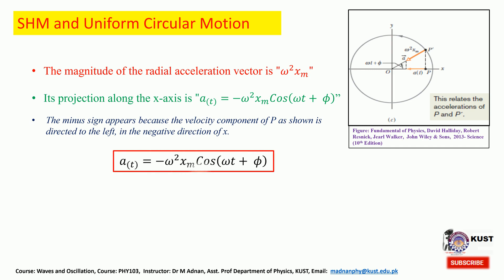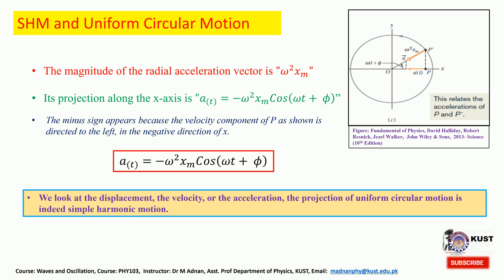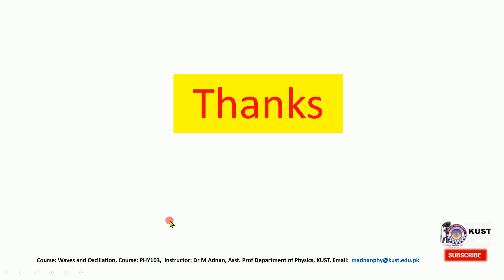After reviewing uniform circular motion, we conclude that the displacement, velocity, and acceleration of the projection of a particle performing uniform circular motion are identical to those of an object performing simple harmonic motion. The projection of uniform circular motion is indeed simple harmonic motion. Thank you very much.